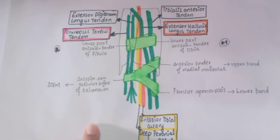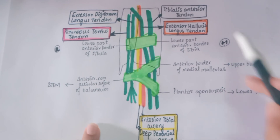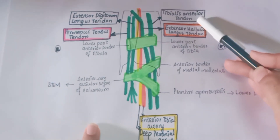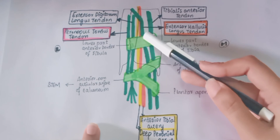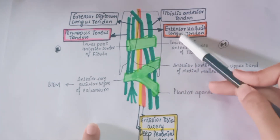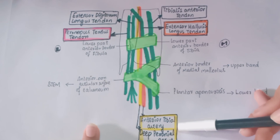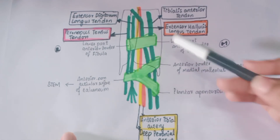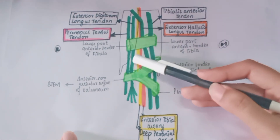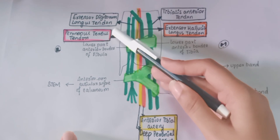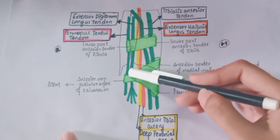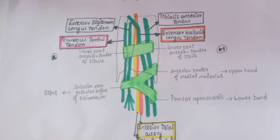A quick review of the contents: tibialis anterior tendon, then the extensor hallucis longus tendon, then the anterior tibial artery and the deep peroneal nerve, then the extensor digitorum longus tendon, and finally the peroneal tertius tendon. This is all about the extensor retinacula of the leg.